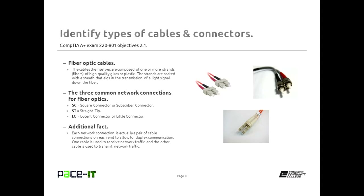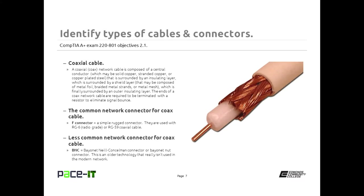The other connector you should know is the MTRJ, the mechanical transfer registered jack. When you look at an MTRJ, it always comes with two fibers bonded together, whereas the others may come as individual wires. When working with fiber optic cabling in a local area network or wide area network, it's actually a pair of cables connected, which allows for duplex communication — one cable is used to receive a signal, the other is used to send a signal. They almost always come in pairs.